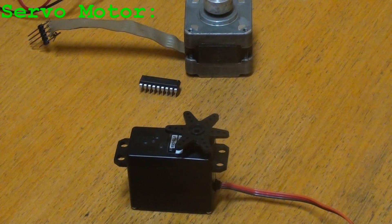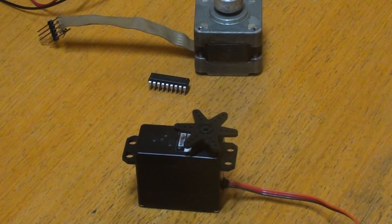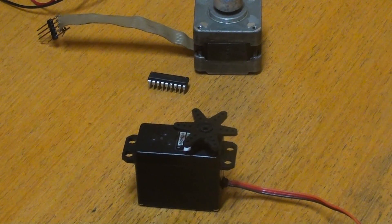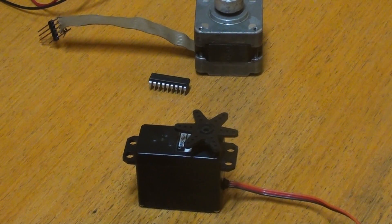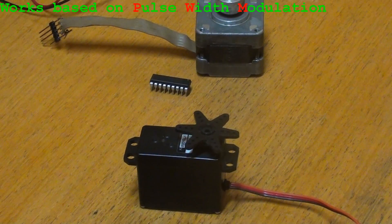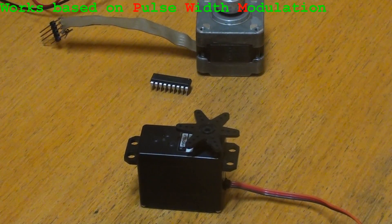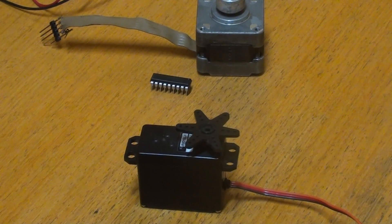The basic configuration of a servo motor is composed of a DC motor, a gearbox, a potentiometer, and a control circuit. Servos are controlled by sending an electrical pulse of variable width, or pulse width modulation (PWM), through the control wire. There is a minimum pulse, a maximum pulse, and a repetition rate.